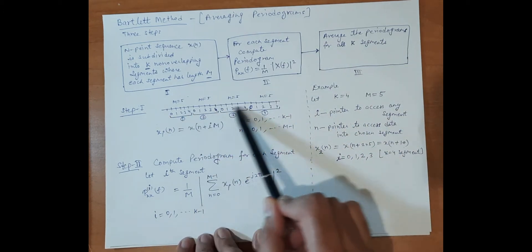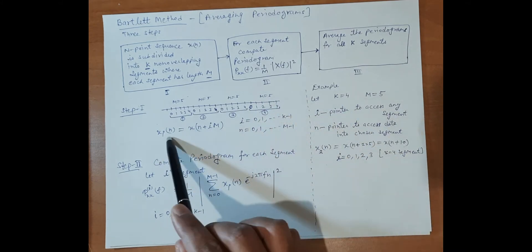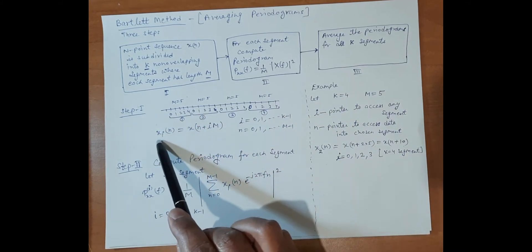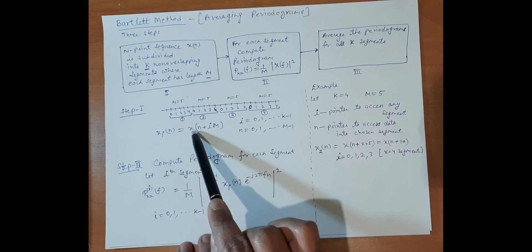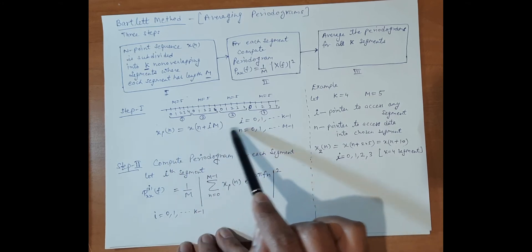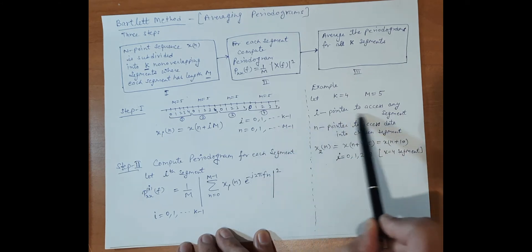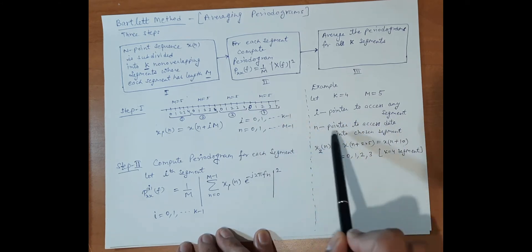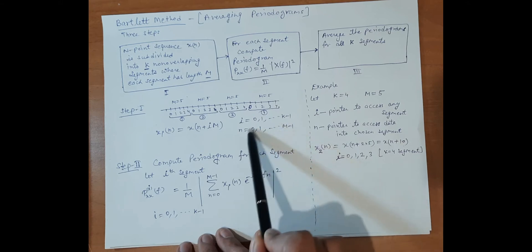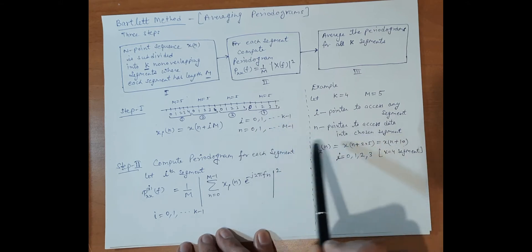Now we have some data. We can put it in different segments by using this expression: x_i(n) = x(n + im), where i varies from 0 to k-1 and n varies from 0 to m-1. Here i is used to access any segment, and n is used to access data within the chosen segment.